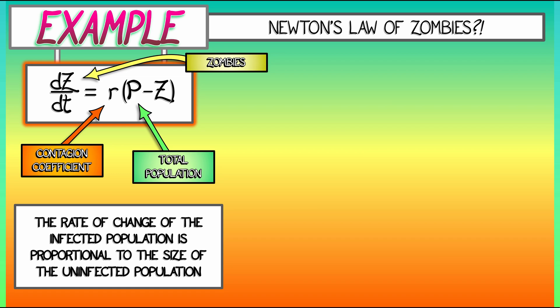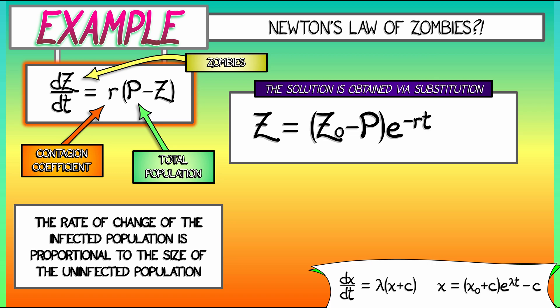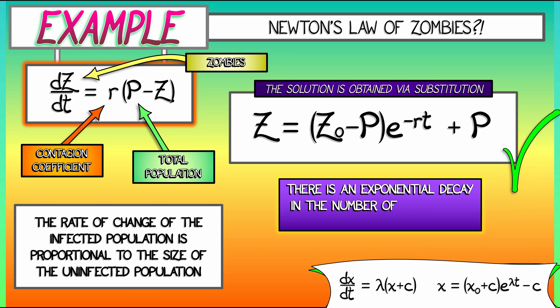And notice, this is exactly the same equation as Newton's law of cooling. This is Newton's law of zombies, if Newton had thought about zombies at all. And because it's the same equation, it's affine. It has the same solution. All we need to do is match up the coefficients, and we get that the number of zombies Z as a function of time t is equal to Z_0 minus P times e to the minus Rt plus capital P.